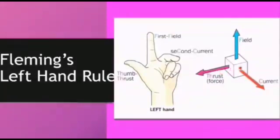these three are mutually perpendicular to each other. These can be represented by holding the thumb and the first two fingers of your hand in such a way that they are mutually at right angles to each other.